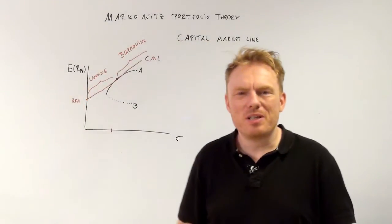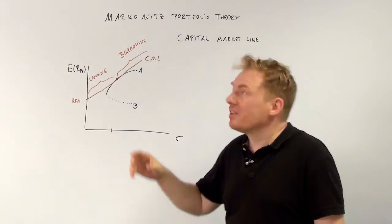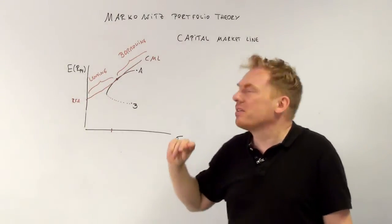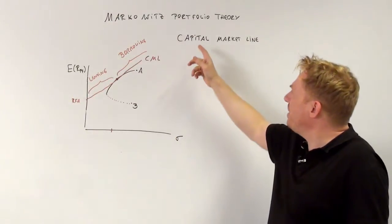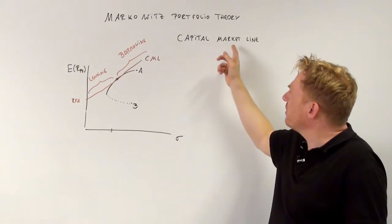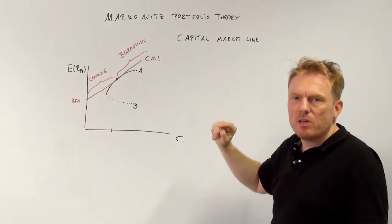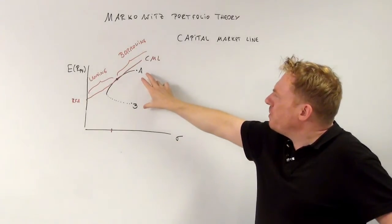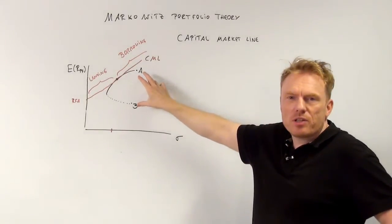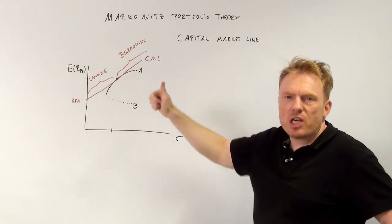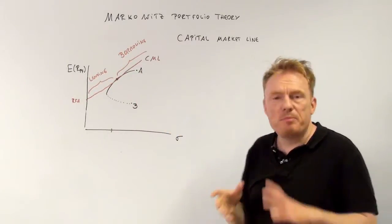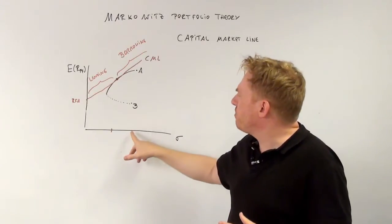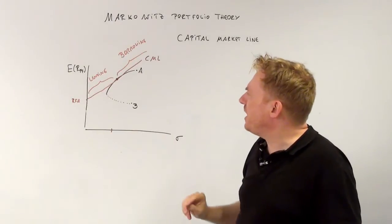Welcome to our next video. We're talking about Markowitz portfolio theory and especially about the capital market line. Remember we were talking about having share A and share B — they both have a risk, measured by the standard deviation.